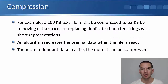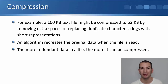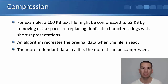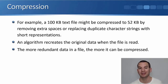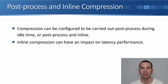For example, let's say we've got a 100 kilobyte text file — we could compress that to 52 kilobytes by removing extra spaces within the file or replacing duplicate character strings with shorter representations. An algorithm recreates the original data when the file is read. The more redundant data that's in a file, the more it's going to be able to be compressed.